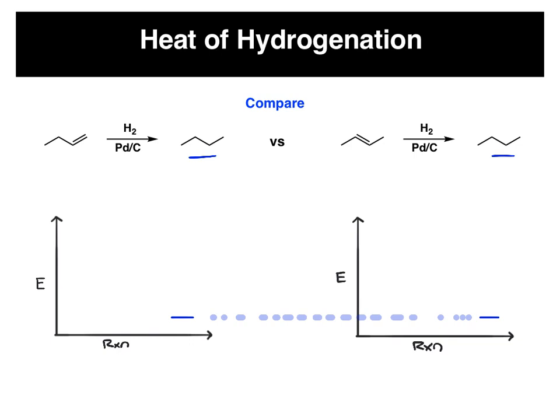Now, if we look at our starting materials, we have the 1-butene, which is less stable compared to the 2-butene, which is more stable. So relatively speaking between the two, this one is lower energy, this one is higher energy.